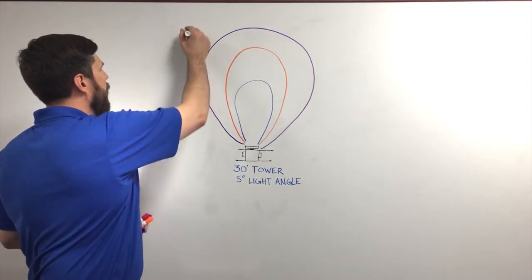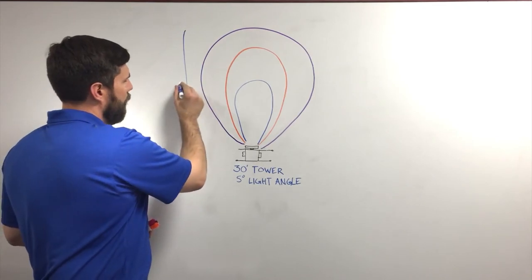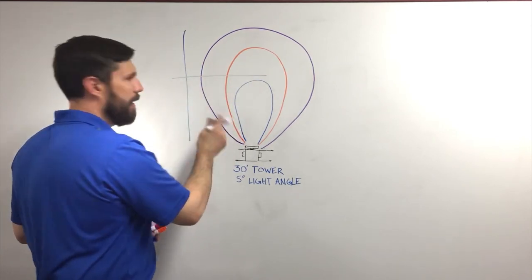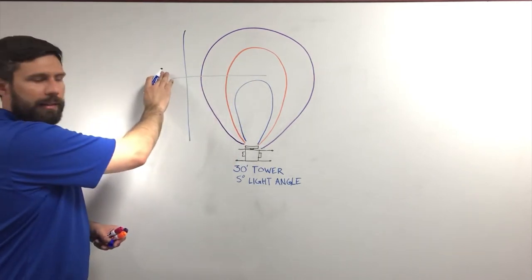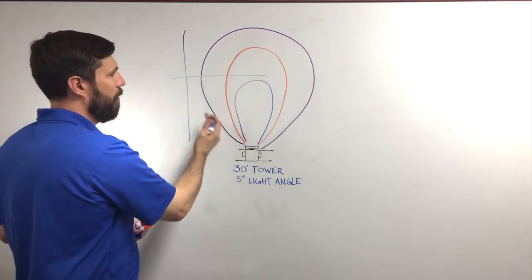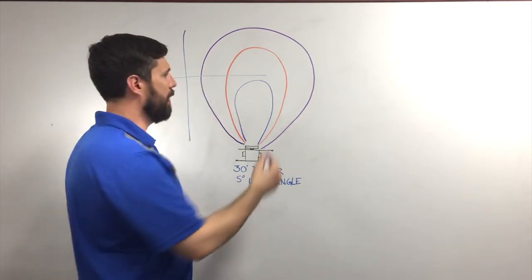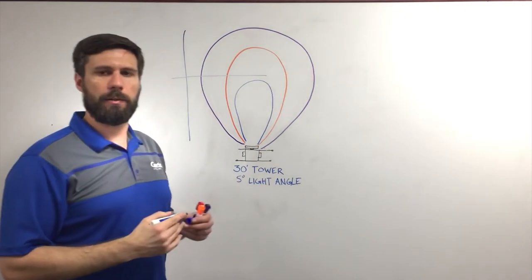So typically there will be a grid and you can find out how far that light is cast for length and for width. And you can determine how many light towers you need depending on the size of your job site.